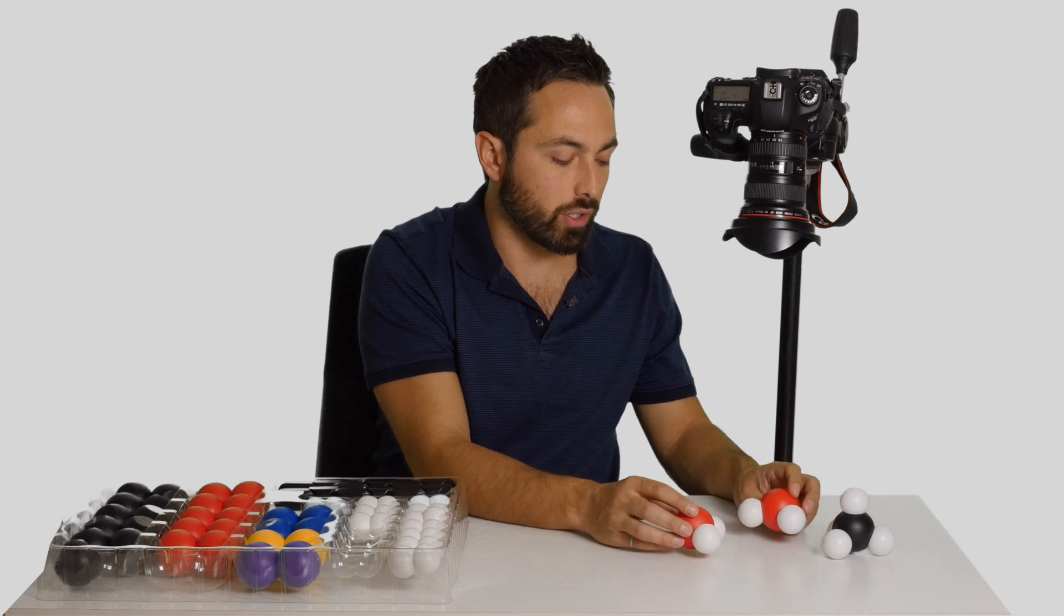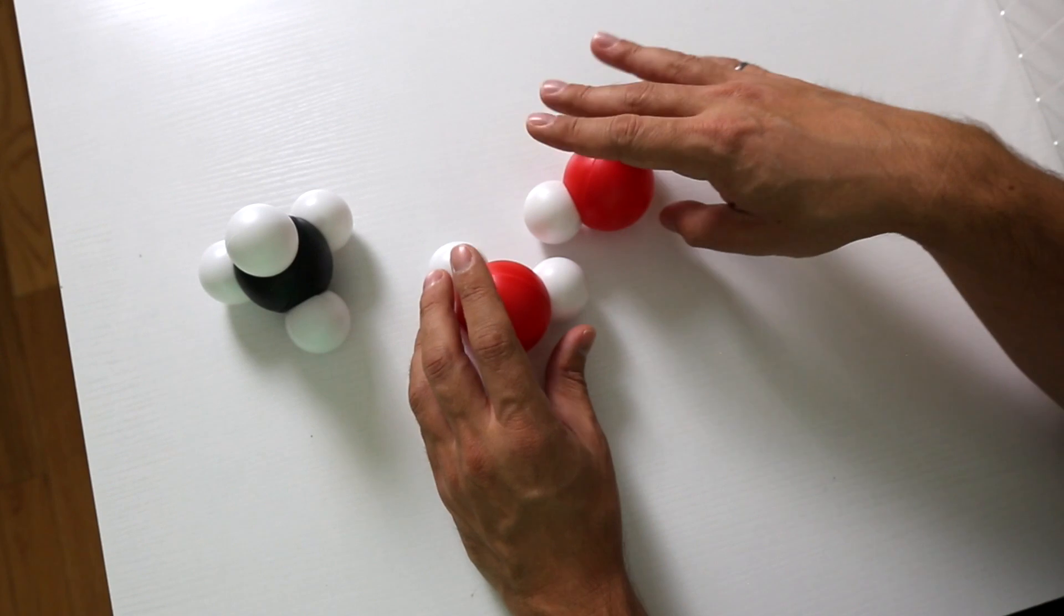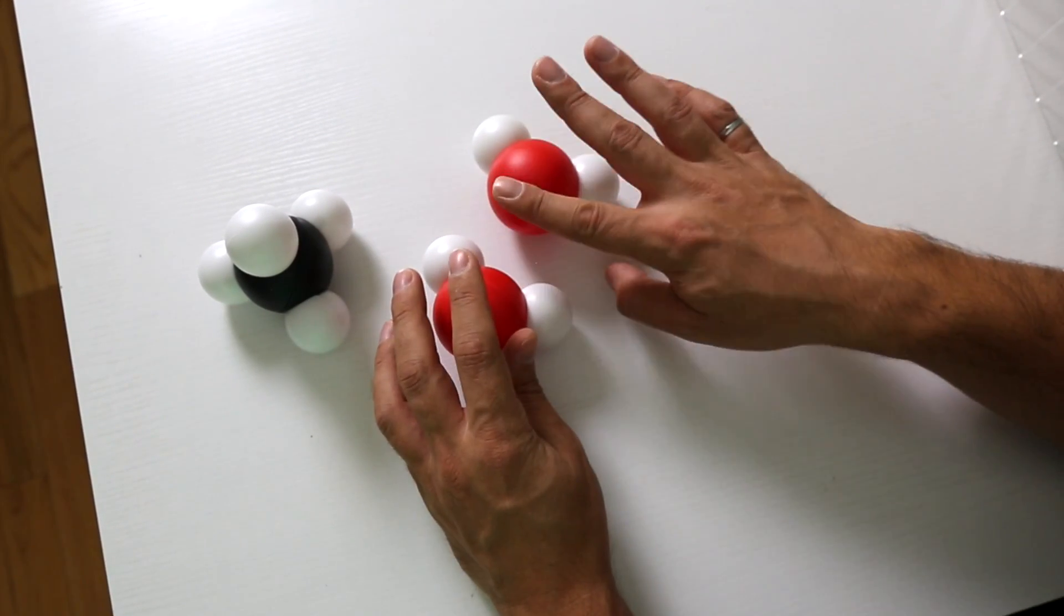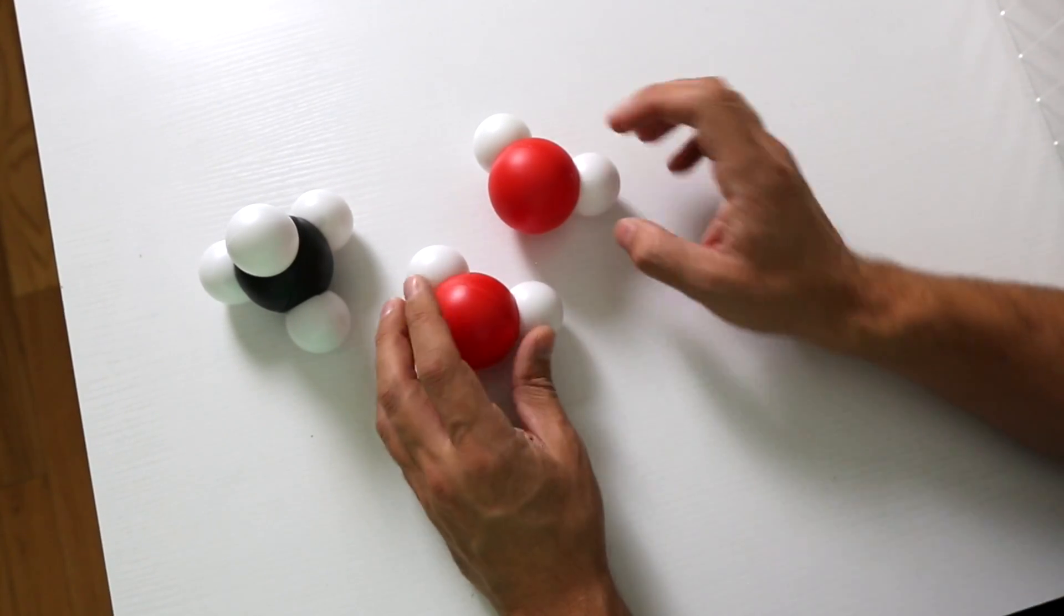If you had two water molecules like this, because of their shape and because of the fact that this side is more negative, they would want to line up more like this. Because you have the negative of this oxygen attracted to the positive of the hydrogens and vice versa.